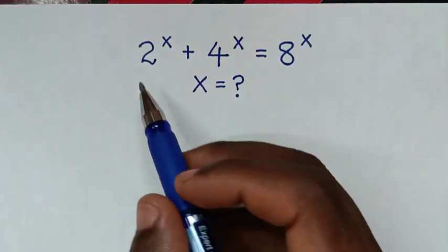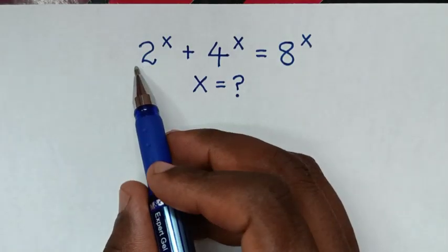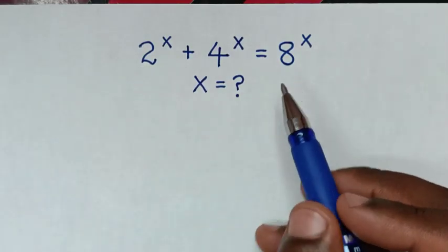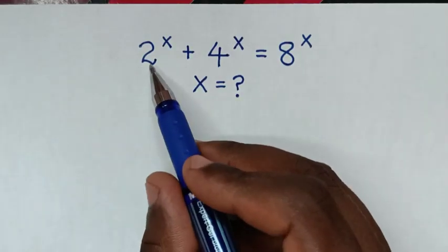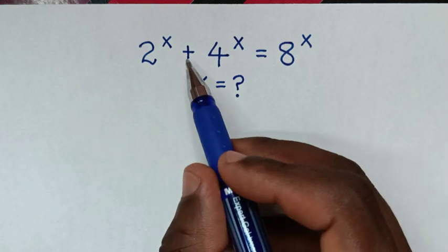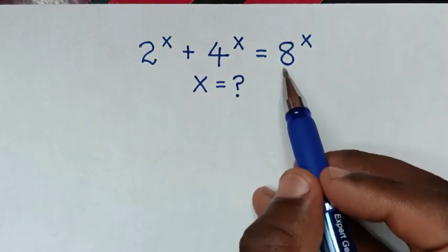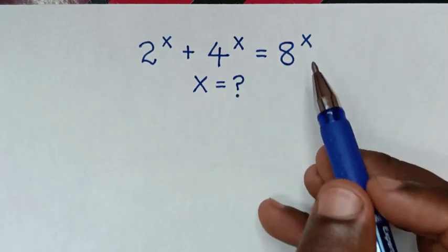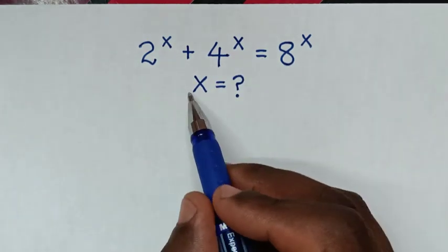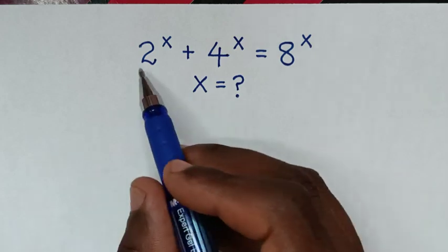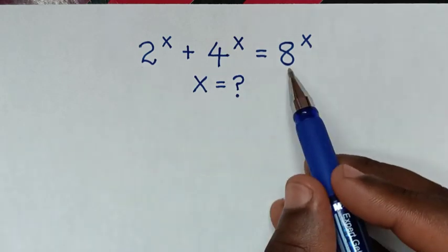Welcome. We are going to solve the math problem: 2 power x plus 4 power x is equal to 8 power x, to find the value of x from this equation.